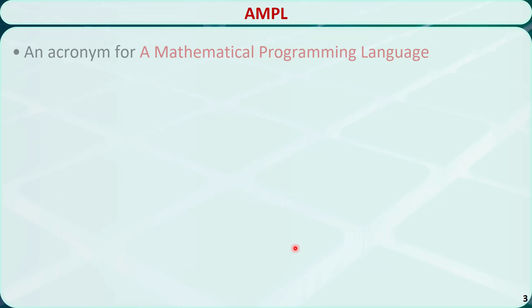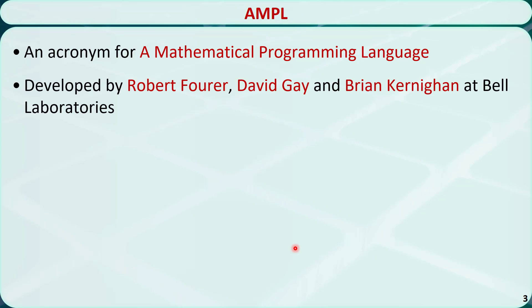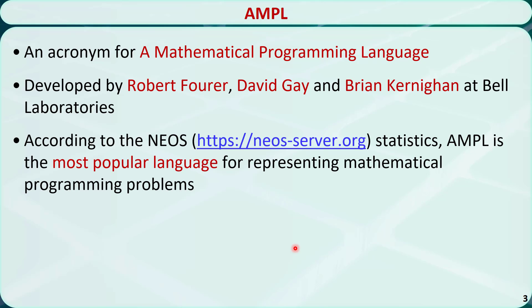AMPL is an acronym for A Mathematical Programming Language. It is an algebraic modeling language for describing highly complex problems for large-scale mathematical optimization. It was originally developed by Robert Fourer, David Gay, and Brian Kernighan at Bell Labs. According to the NEOS statistics, AMPL is the most popular language for representing mathematical programming problems.